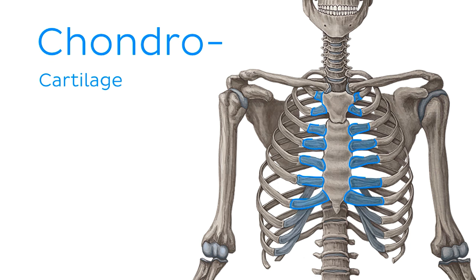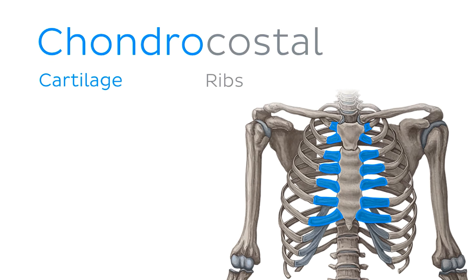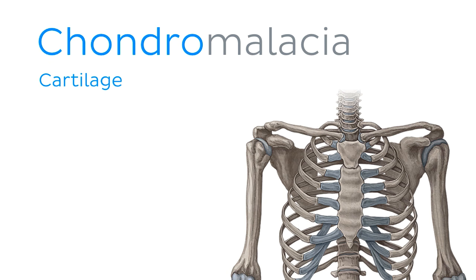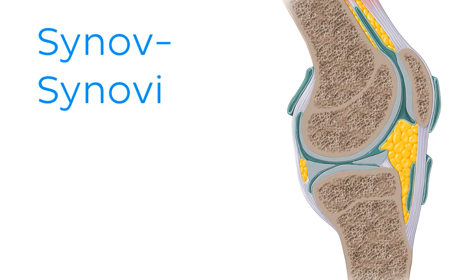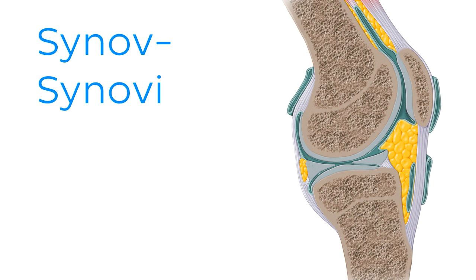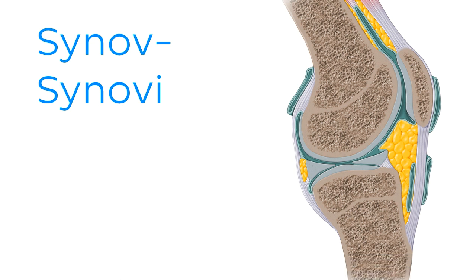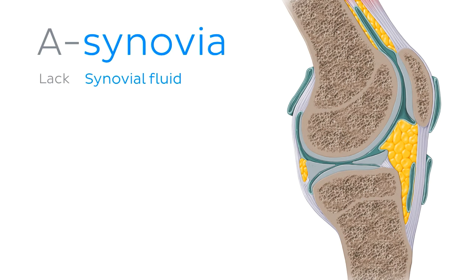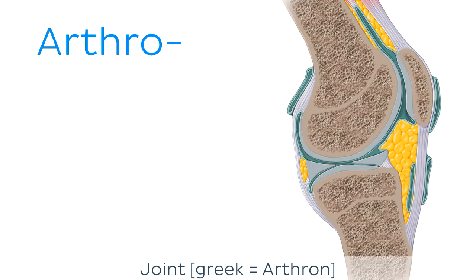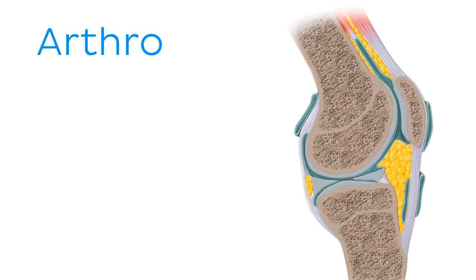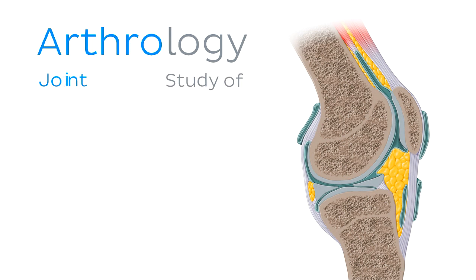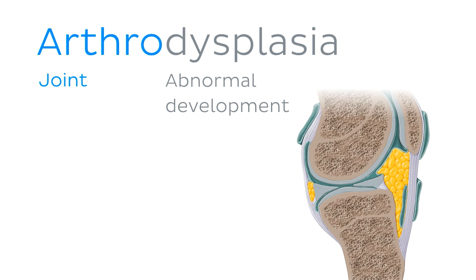Our next prefix is chondro, which refers to cartilage. For example, we have chondrocostal, which refers to a structure or region pertaining to the ribs and costal cartilages, or chondromalacia — an abnormal softening of the cartilage. Next is synov or synovio, which you've probably heard of in relation to synovial fluid or synovial joints. Absent or insufficient production of synovial fluid is what we call asynovia. And last but not least, we have arthro — a prefix referring to a joint, such as in arthrology, the study of joints, or arthrodysplasia, a congenital defect of joint development.